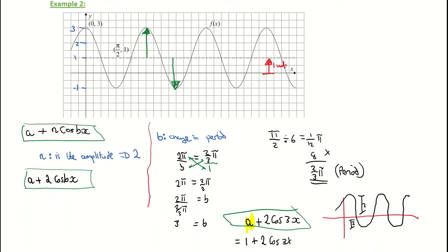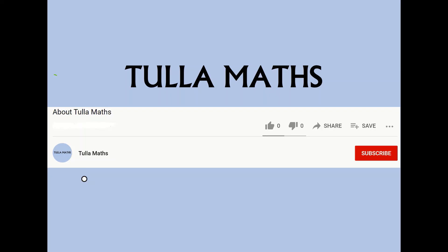If the graph were pulled downwards, you would have a negative value for a. That's looking at two graphs — one being a cosine and the other being a sine. Thank you for watching another tutorial video from Tullamats. Make sure and subscribe.